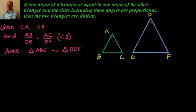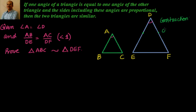Now, like we have done in the last videos, to go ahead we want to construct first. We want to leverage AB/DE equal to AC/DF and try to get a parallel line, or use the converse of the basic proportionality theorem to find the angles, thereby proving the triangles are congruent. To do that, the construction is: cut DP equal to AB, and cut DQ equal to AC, then join PQ.